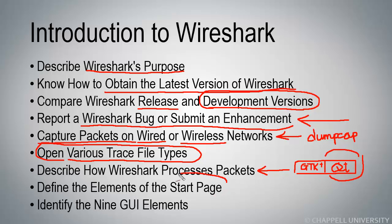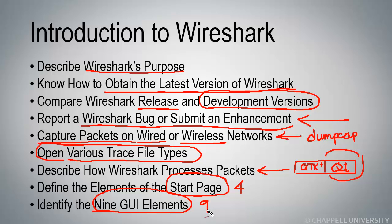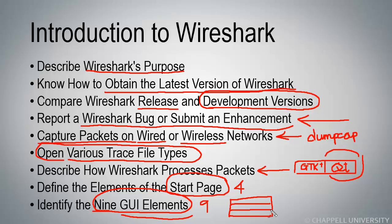I'll then take you into the start page and show you the four elements in the start page and how to use those elements. And then I'll take you into the nine graphical user interface elements. It's important to understand how the graphical elements relate to each other. For example, you may be familiar with Wireshark's three-pane display where we have a packet list pane on top, then a packet detail pane in the middle, and then a packet list pane down below. In this section, I'll show you how these three panes relate to each other.